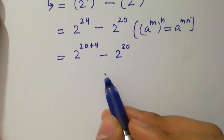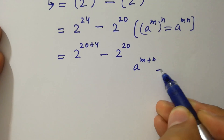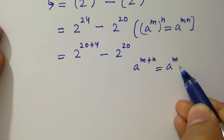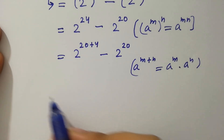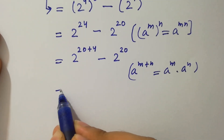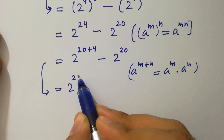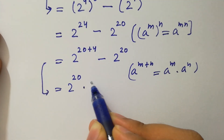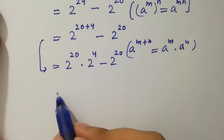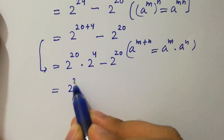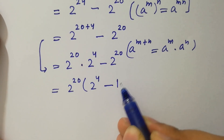Using the rule a^(m+n) equals a^m times a^n, this becomes 2^20 times 2^4 minus 2^20. Then 2^20 can be factored out, giving 2^20 times (2^4 minus 1).